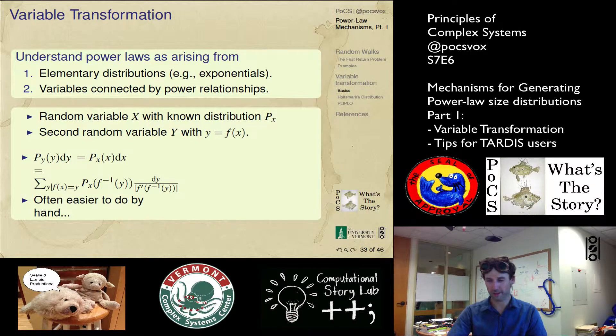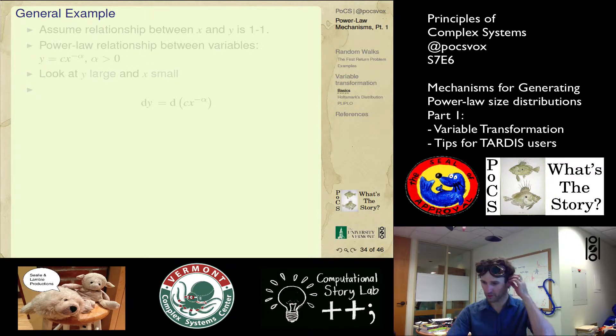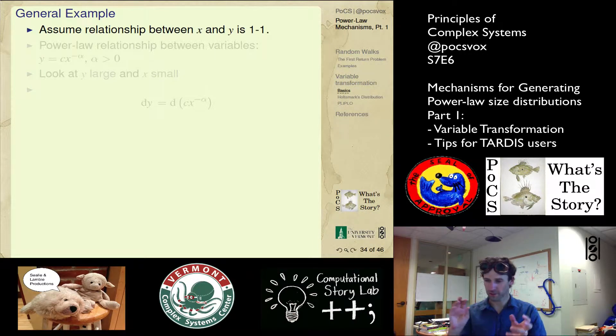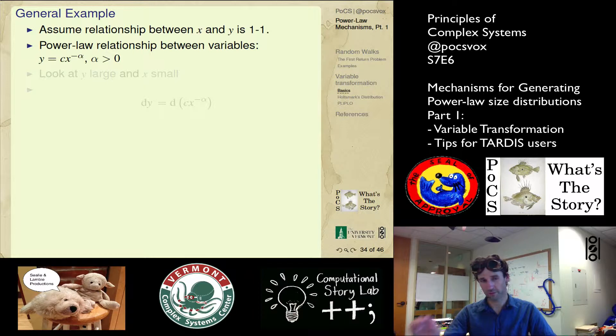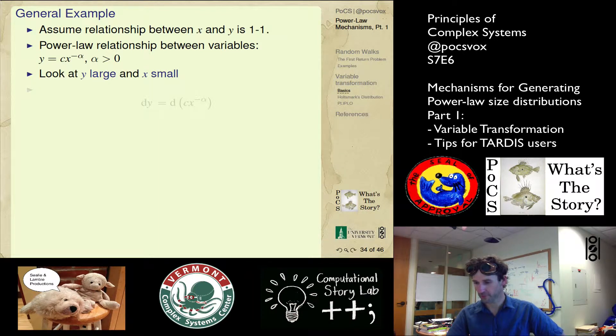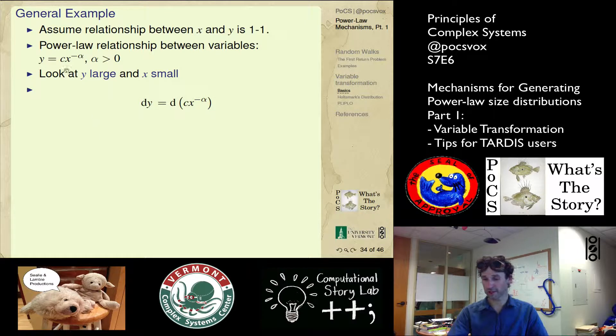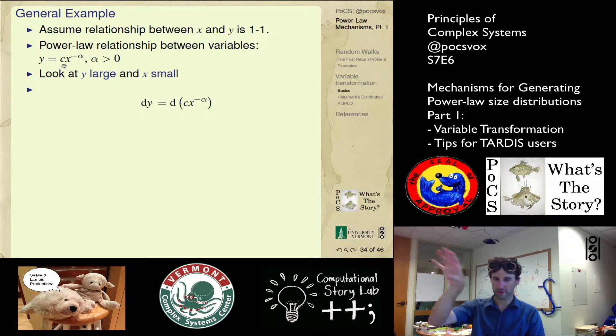Let's do it for this more specific example. Let's imagine we have a one-to-one relationship, so that funny little sum thing goes away. And that we have a power relationship between them: y is equal to c x to the minus alpha. We're going to look at y large and x small. We need the inverse of x. The inverse of this function is very easy. We divide by c, we get y over c.